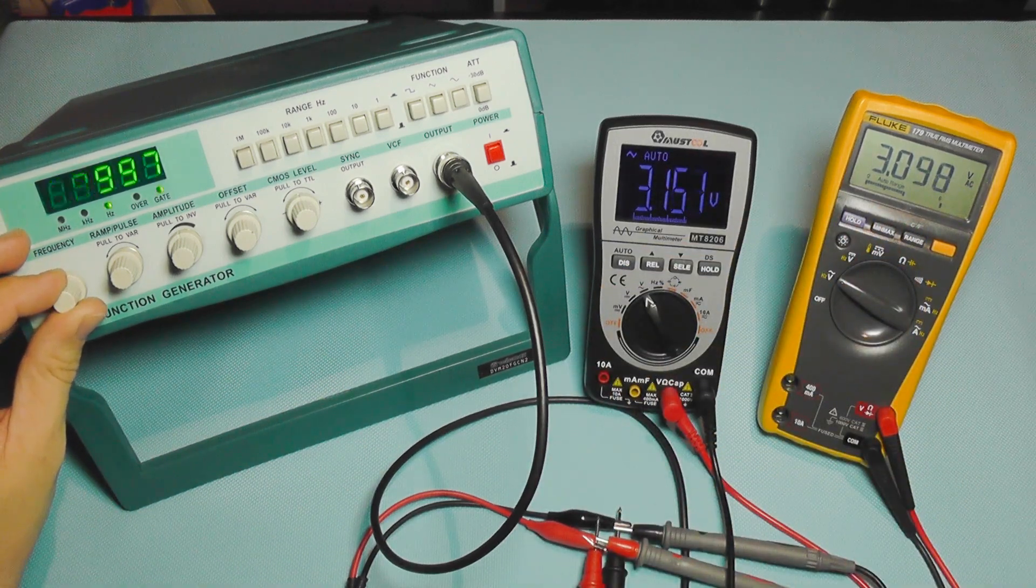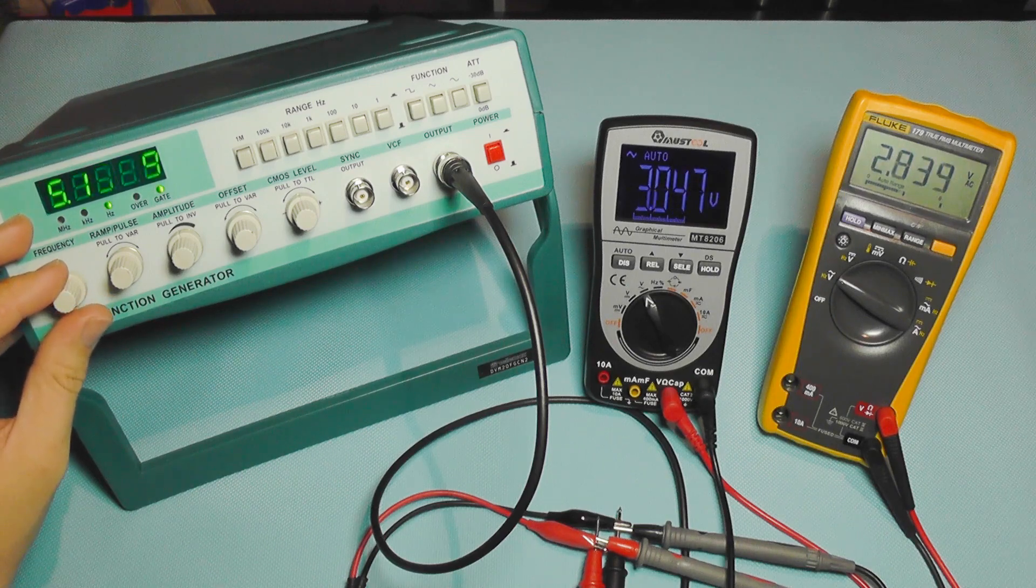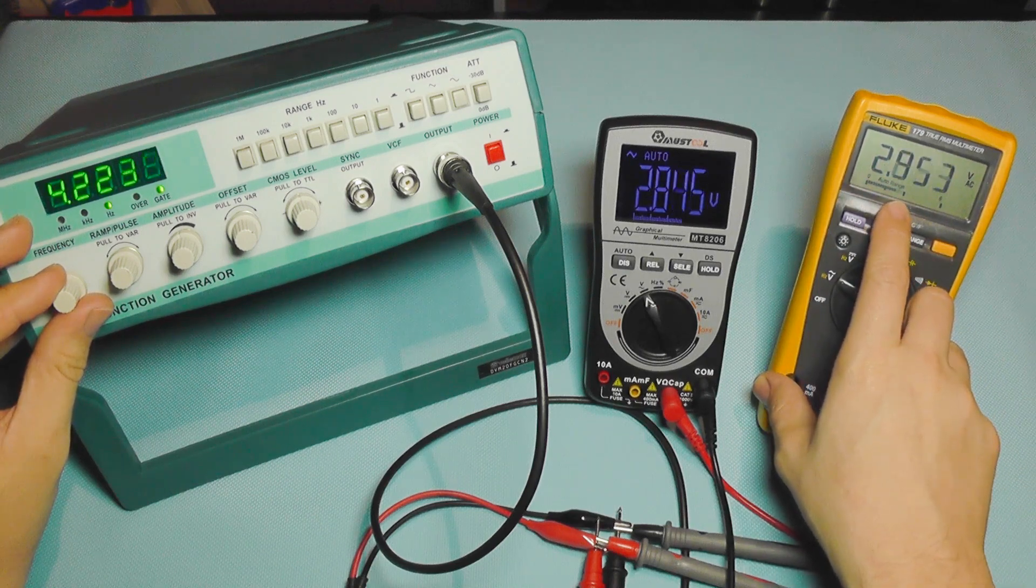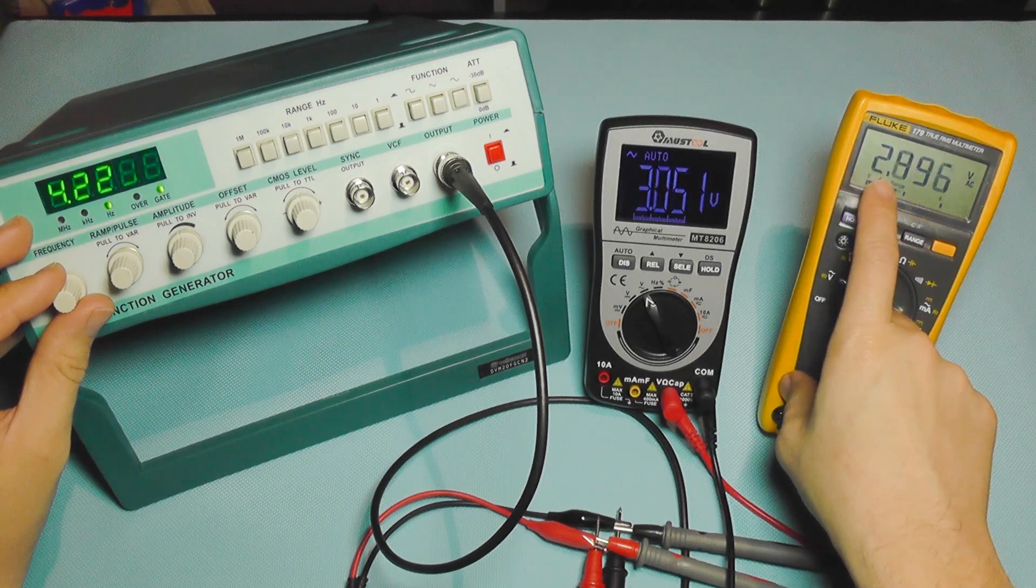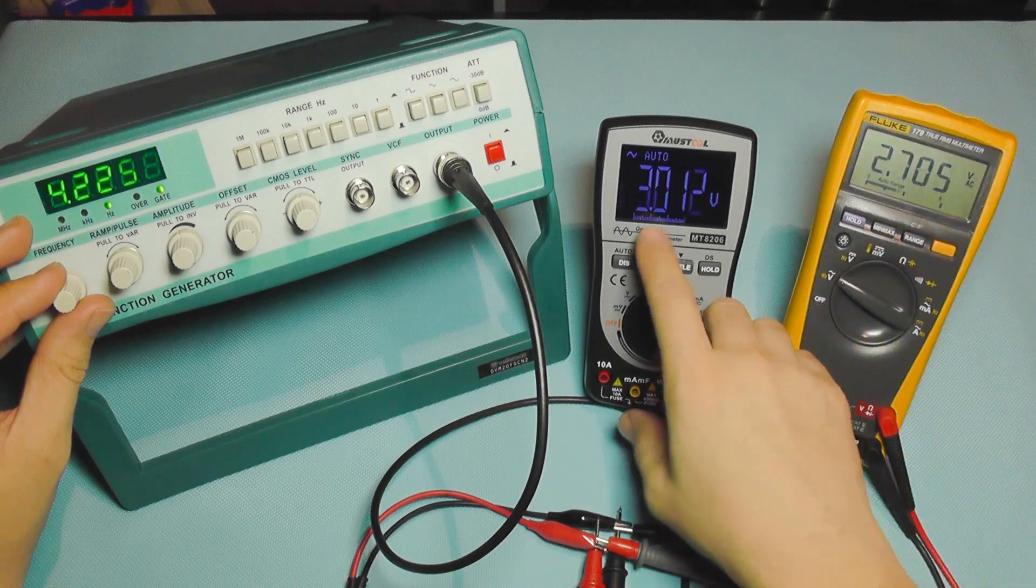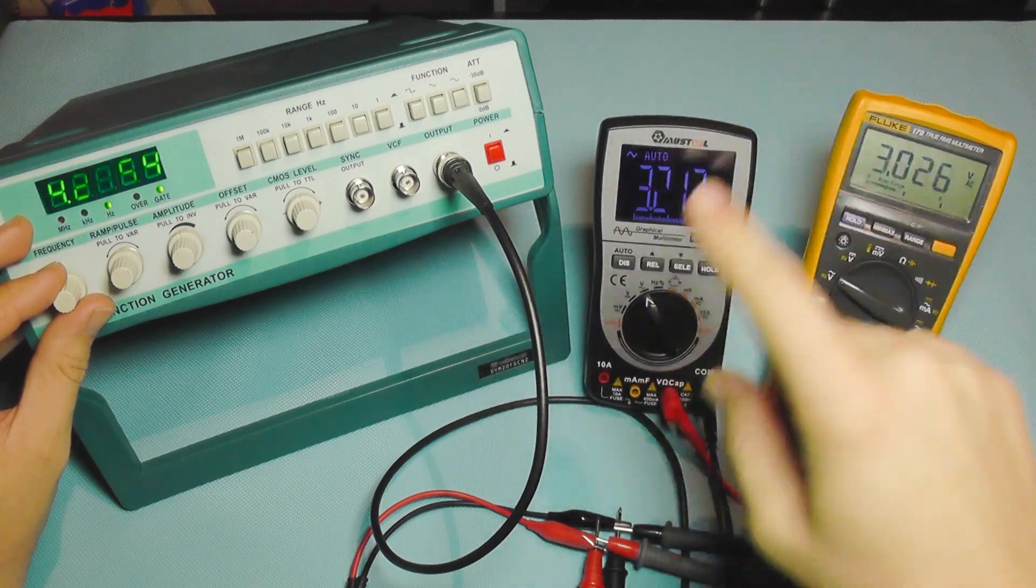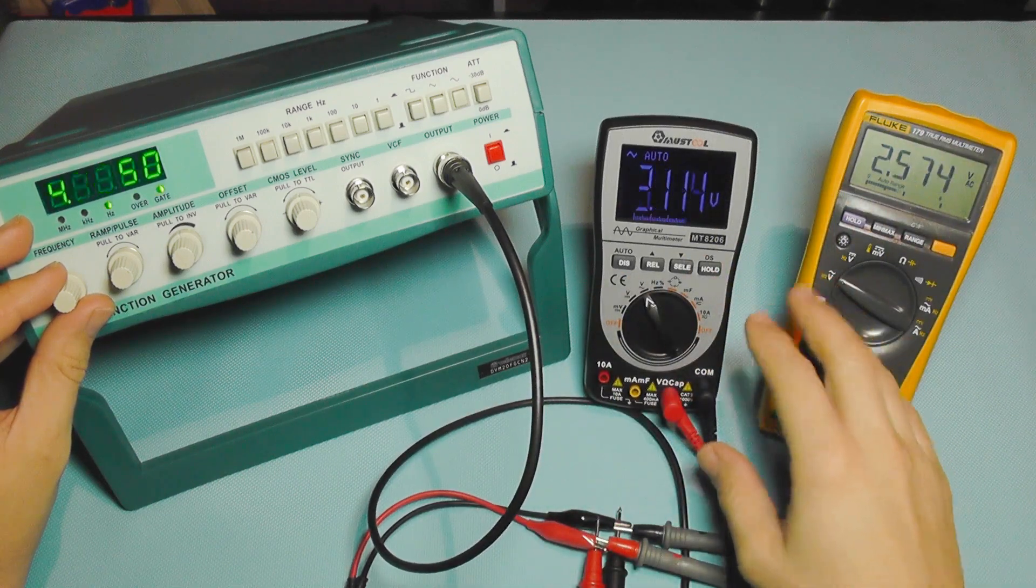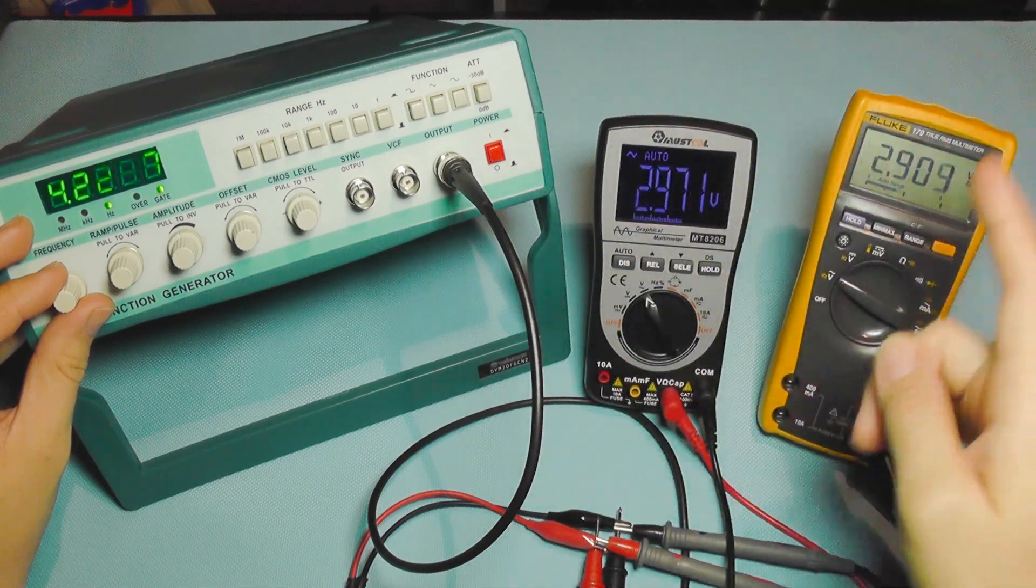If I reduce the frequency and go lower, it's now more obvious. You can see this bar graph pulsating and the voltage varies very much. This jumps from two and something volts to three volts, while this shows around three volts. The voltage is varying too fast because it increases and decreases constantly.